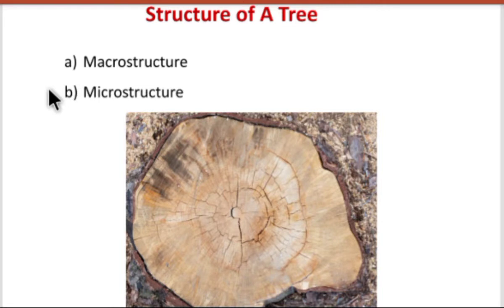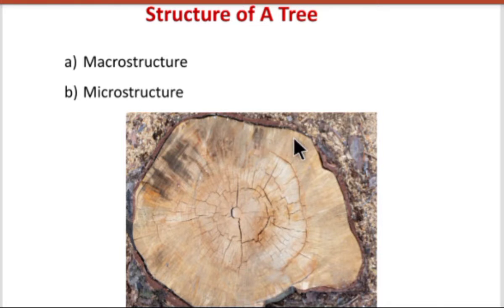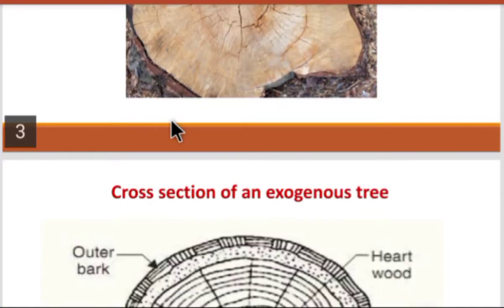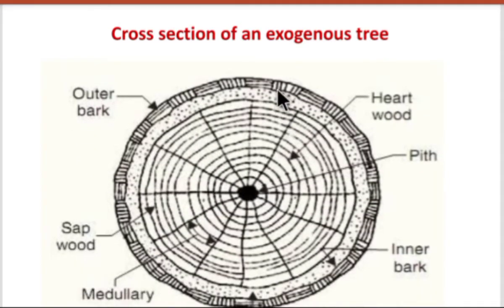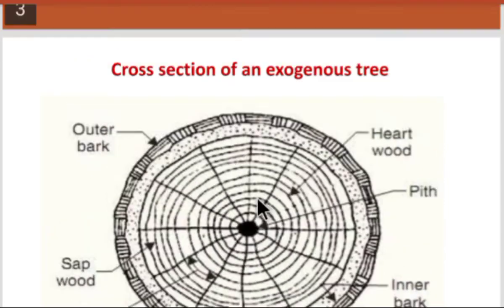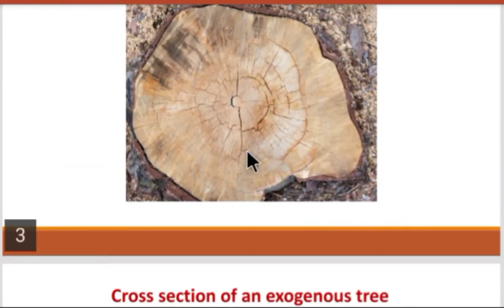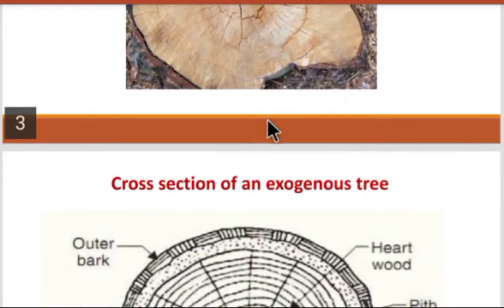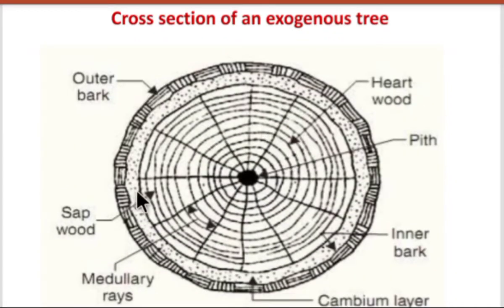The second is microstructure — the structure which you can see only using a microscope, as it has a very fine structure. This is the cross section of an exogenous tree. When you cut the exogenous tree, it will look like this.